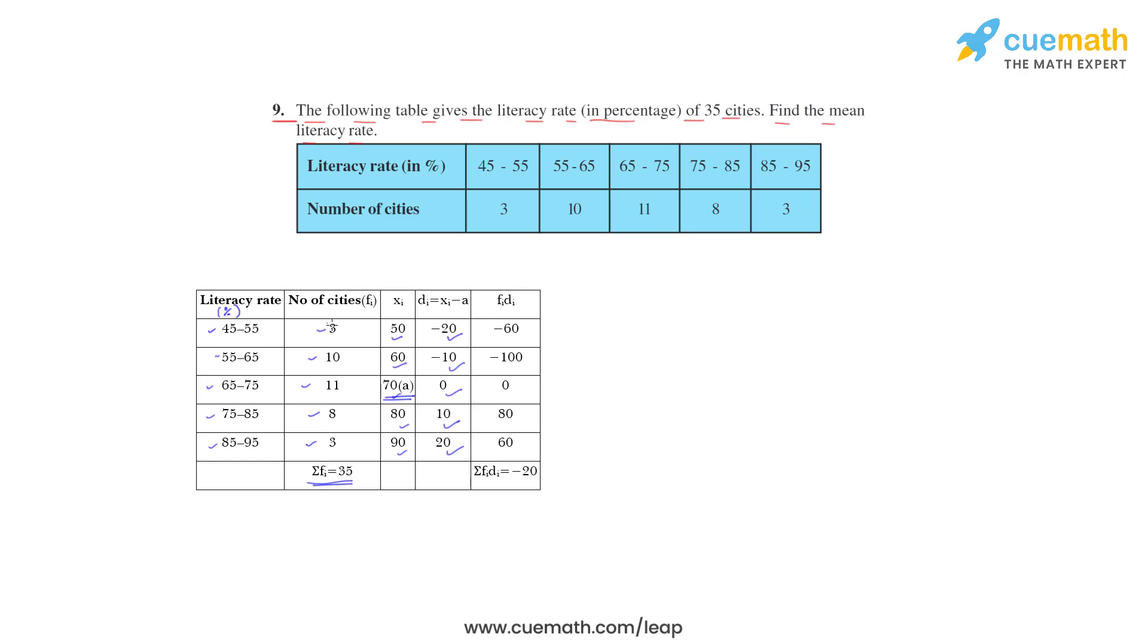Then fidi we have to find. So 3 into minus 20 is minus 60; 10 into minus 10 is minus 100; 11 into 0 is 0; 8 into 10 is 80; 3 into 20 is 60. Sum of all fidi is minus 20.